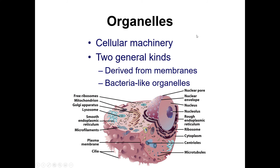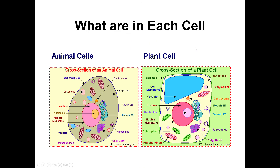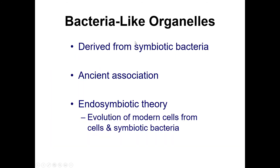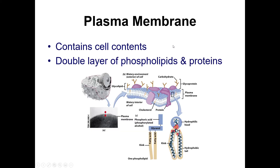Organelles are like cellular machinery — just as we have organs that keep us working, cells have organelles. There are two different kinds: organelles derived from membranes, and organelles derived from bacteria. Bacteria-like organelles have an ancient association with cells. The theory that encapsulates this is that modern cells came from cells and symbiotic bacteria working together to create what we have today.